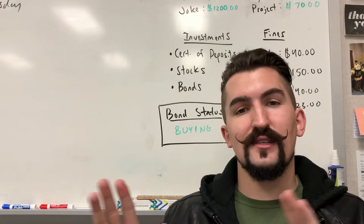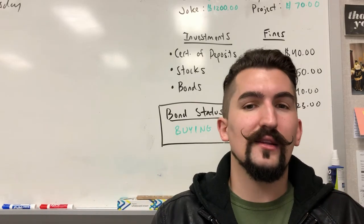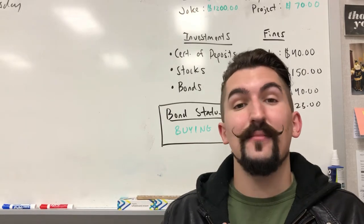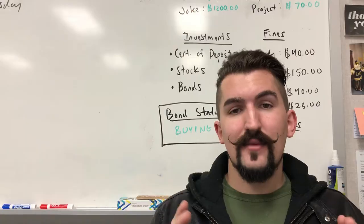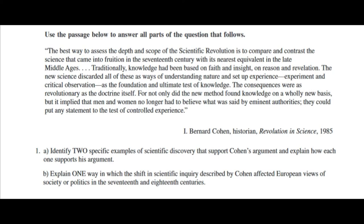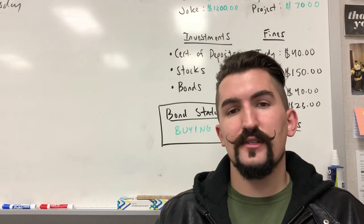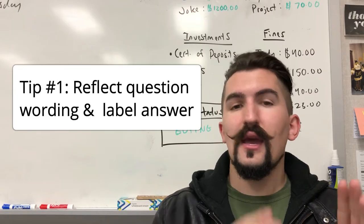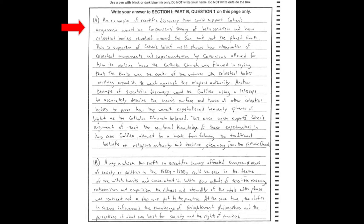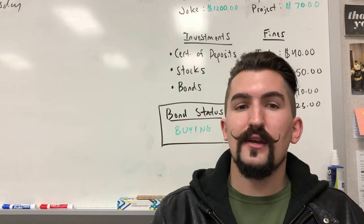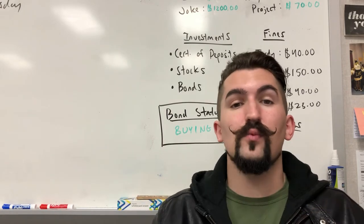While the LEQ and DBQ are worth six and seven points respectively, they are weighted slightly differently. The format for each short answer question, which you have roughly 13 and a half minutes on average to answer, is going to come either in the form of A with two points to answer and B with one point, or ABC each with one point to answer. You'll want to label your responses clearly so the test grader can see which is which.